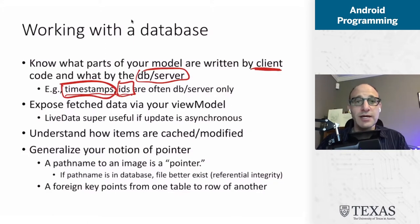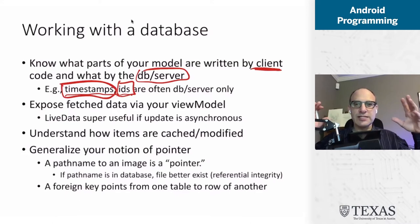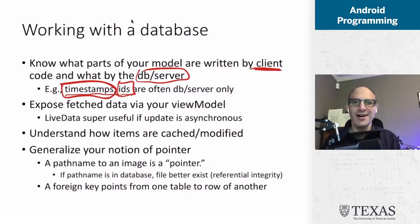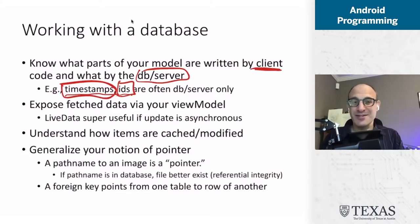We also generate random IDs in one of our projects, and we generate random IDs so that two different clients without communicating can generate IDs independently. Now, you might say: if they're random, what's to stop them from generating the same ID? And the answer is probability. If you have a big enough random space, the probability of collision is less than the probability that from quantum fluctuations our sun is just going to disappear.